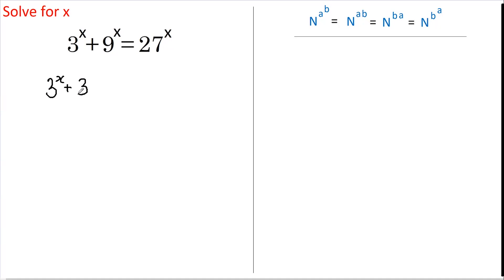Now this rule here tells us that when we've got a number raised to a power and that's all raised to another power, we can write that as that same number to the powers multiplied together, or we can reverse those powers. So doing that, we end up with 3 to the power of x plus 3 to the power of 2x.